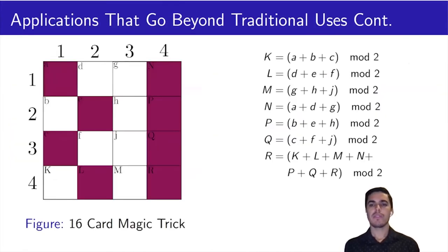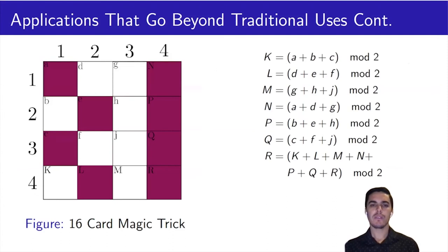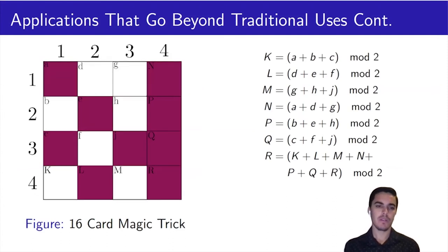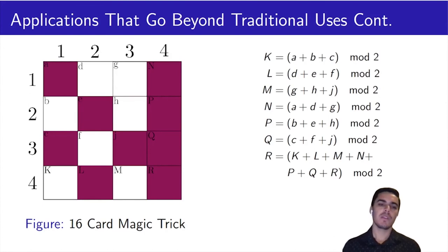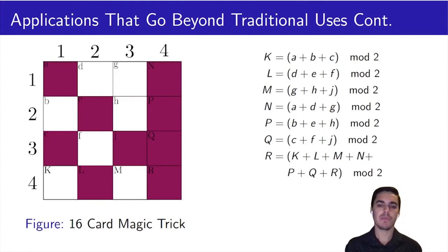The final thing I achieved in this research is finding a new application that uses topics in error correcting codes. This new application takes the form of a card trick, where the magician correctly guesses the card on the grid that was flipped by the audience.